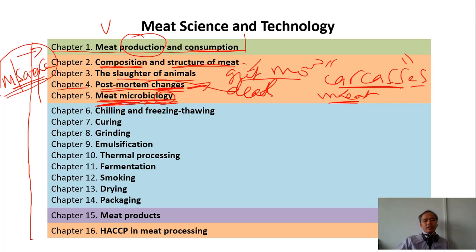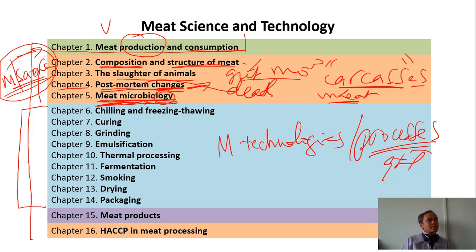From here, Chapter 6 to Chapter 14, we can call them meat technology or processes - the processes that we use to process meat products. Chapter 6, we talk about chilling and freezing. What is the difference between chilling and freezing?